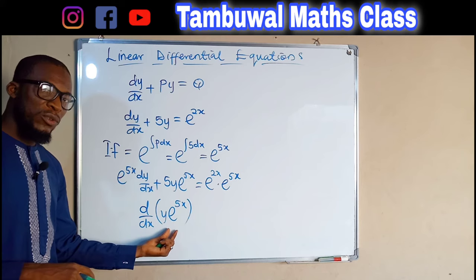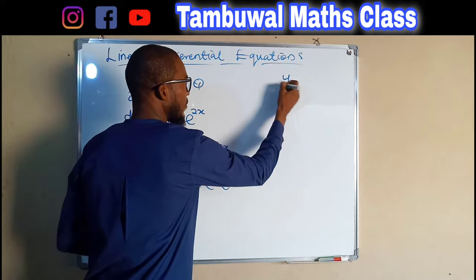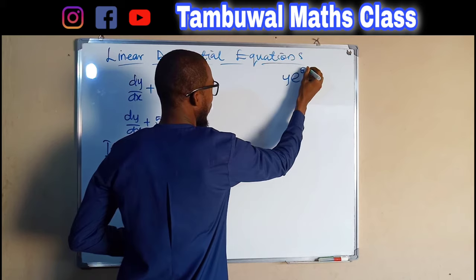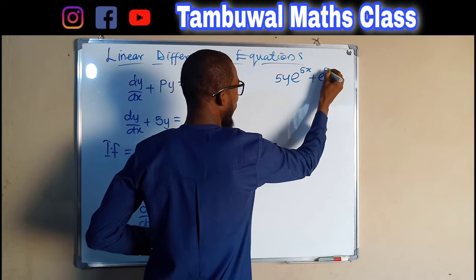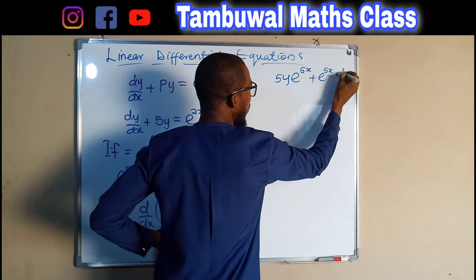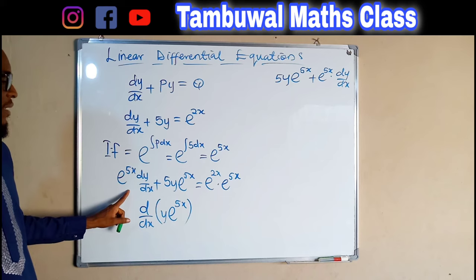If you want to verify, you can take the derivative using the product rule: keep y constant, take the derivative of e^(5x) which gives 5e^(5x), plus keep e^(5x) constant and take the derivative of y which is dy/dx. Looking at these two terms, they are exactly the same as the left-hand side, so we can write them in this compact form.